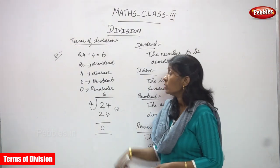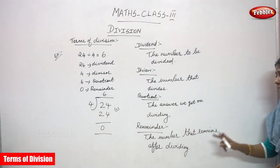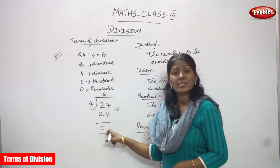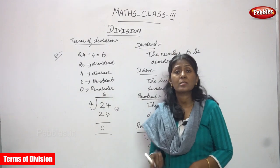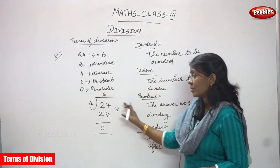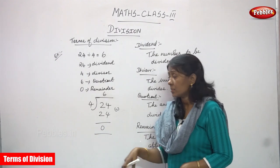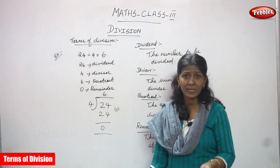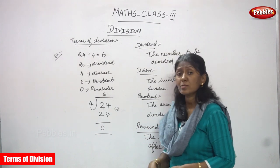Now subtract: 24 minus 24 gives you 0. So 0 is the remainder. The remainder is the number that remains after dividing. After dividing, the remaining number is called the remainder. Here, the remainder is 0.